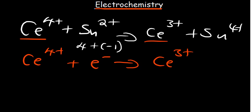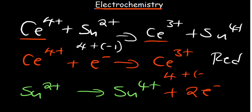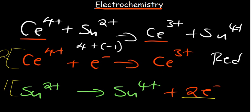This is the reduction reaction. For the oxidation half-reaction, moving from +2 to +4, we show that two electrons were lost. Now we need to balance so that electrons lost equals electrons gained. The reduction reaction gains one electron and the oxidation loses two, so we multiply the reduction half-reaction by two and keep the oxidation half-reaction as is — the coefficients come from the electron counts.